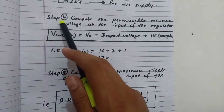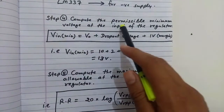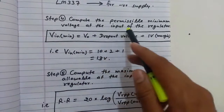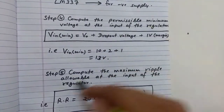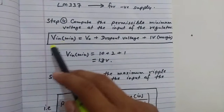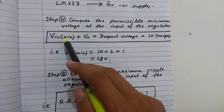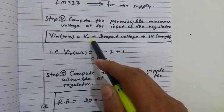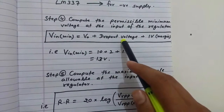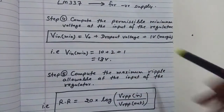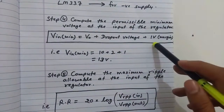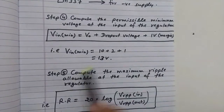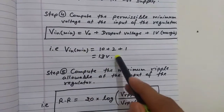The fourth step is to compute the permissible minimum voltage at the input of the regulator: V_in(min) = V_out + dropout voltage of regulator IC + 1 V margin = 13 V.